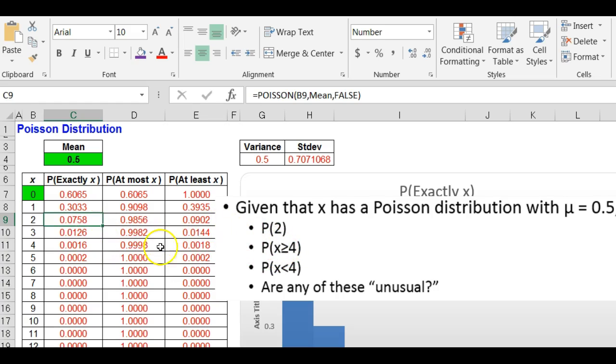Exactly two. Four or more is at least four. Yep, 0.0018. The probability in this case that x is greater than or equal to four would be unusual because 0.0018 is less than 5% or less than 0.05.